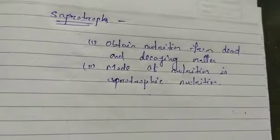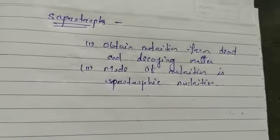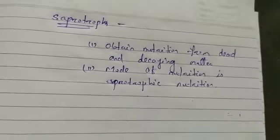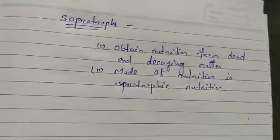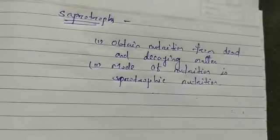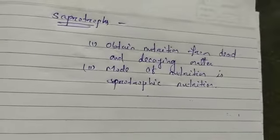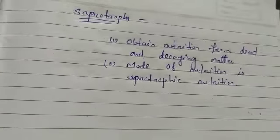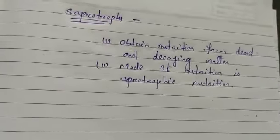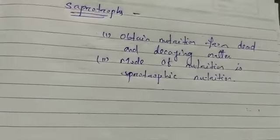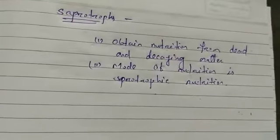Saprotrophs are decomposers. They obtain energy for their own use by breaking down complex organic matter from dead bodies of other organisms. That means they are decomposers — they decompose the dead bodies of other organisms and get energy by breaking down the complex organic matter.